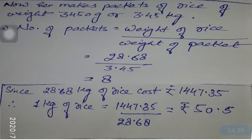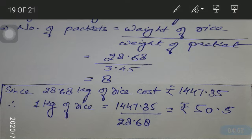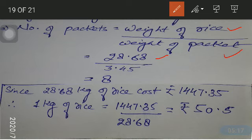According to the question, he makes packets of rice of weight 3450 grams or 3.45 kilograms. We need to find the number of packets. Since the packets are filled with mixed rice, we divide the total weight 28.68 by 3.45 to get the number of packets. This rounds out to approximately 8 packets.